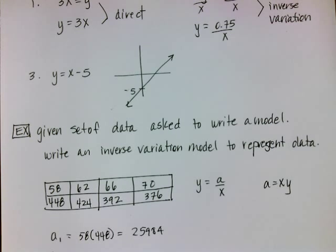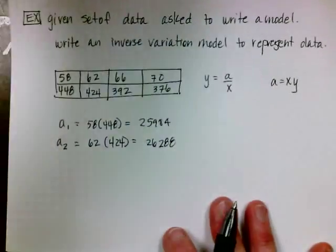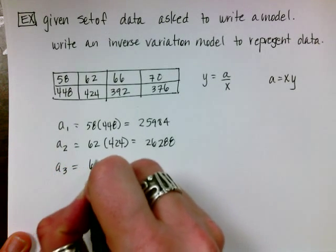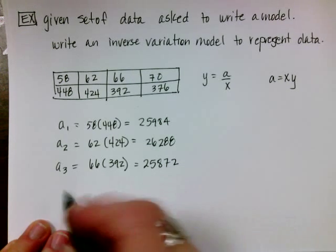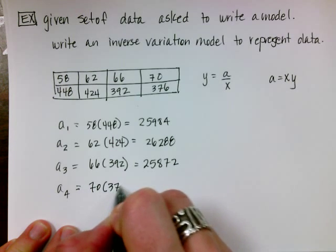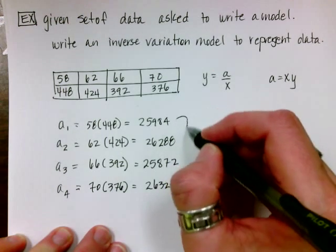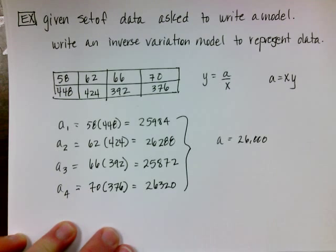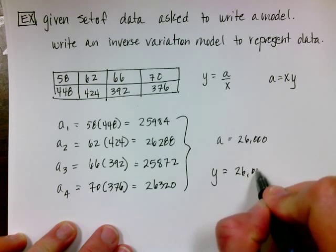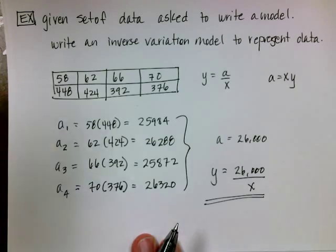If I did the second column, I would get 62 times 424, and that would give me 26,288. So notice they're not exactly the same, but they both round to 26. If I do the third column, same procedure, 66 times 392, I'm going to get 25,872. Again, this rounds to 26. And the fourth column is going to be 70 times 376, and I'm going to get 26,320. So none of these numbers are identical, but they do all round to 26,000, and that's what the book is going to use. So they're going to say A equals 26,000. Therefore, my model is going to be 26,000 divided by X. And that would be my solution. And then oftentimes they ask you to predict some behavior.